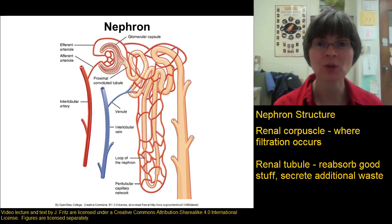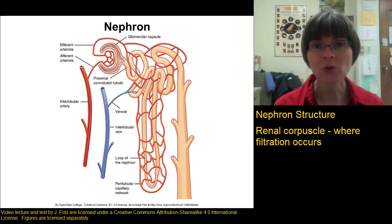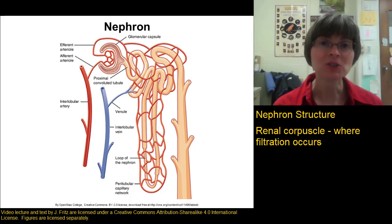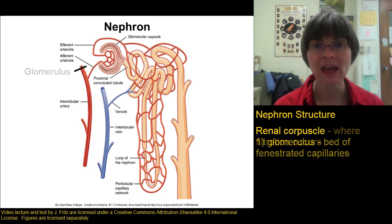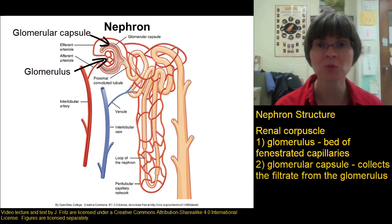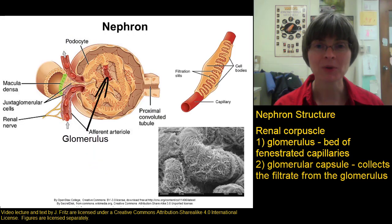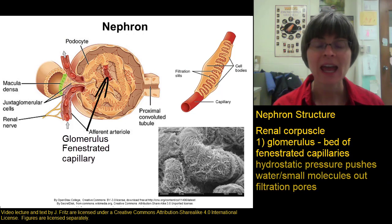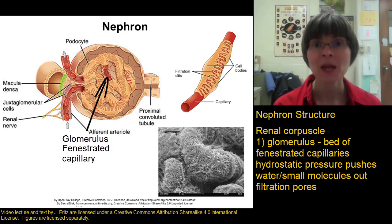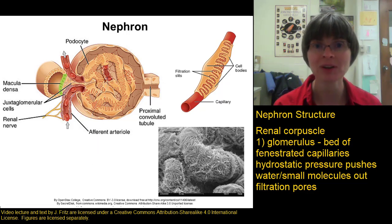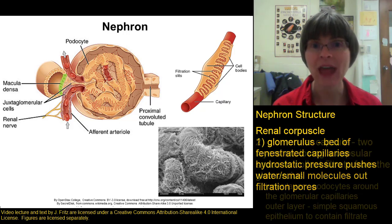The renal corpuscle is where we actually collect the filtrate from the blood. There are two main parts to the renal corpuscle: the glomerulus, which we've talked about already, and the glomerular capsule that's around the glomerulus. The glomerulus is a bed of fenestrated capillaries with filtration pores, and the hydrostatic pressure — the blood pressure — pushes water and small molecules out of the filtration pores and into the glomerular capsule.